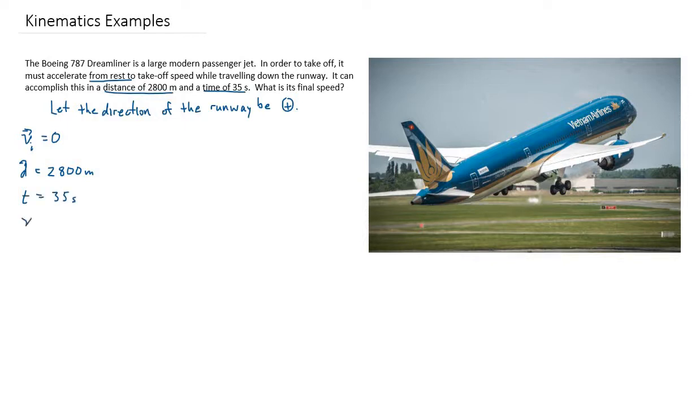And then we are asked to find its final velocity or final speed. And so that's the unknown. And so hopefully, after you've done this, you see that we have four of the five variables that are involved in this question.